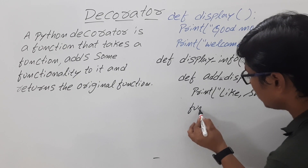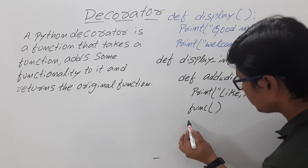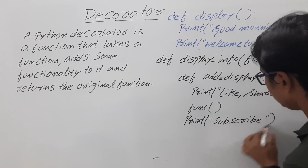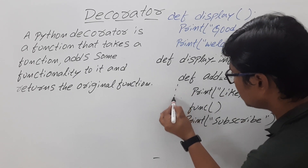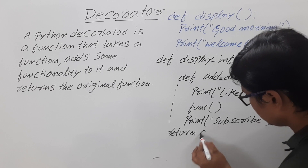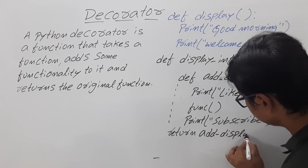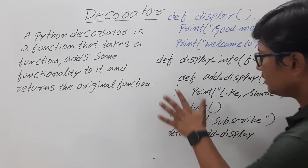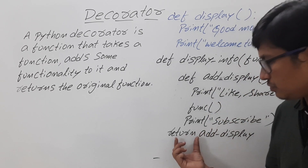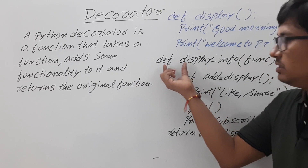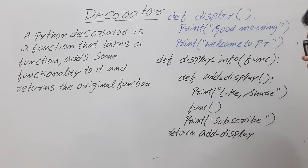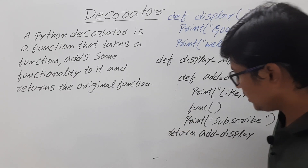Inside display_info, I am defining another function called 'add_display'. Inside add_display I am writing 'print like, share', then I am calling the function, and then writing 'print subscribe'. Then I want to return this function — see the indentation is very important — so I write 'return add_display'. You are returning the function which is add_display. This is what I told you in the last video: how can you return a function from another function.